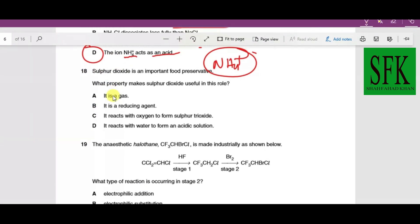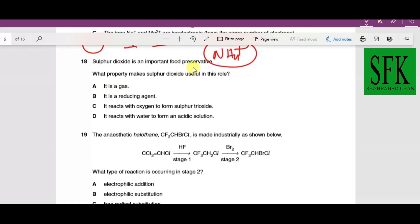Sulfur dioxide is an important food preservative. What property makes sulfur dioxide useful in this role? Sulfur dioxide is a reducing agent—it prevents the food from getting oxidized. That's why it's used to preserve food.